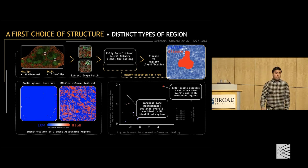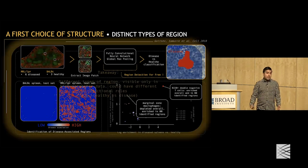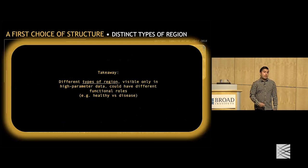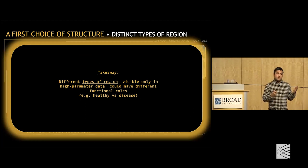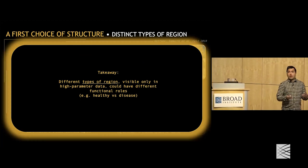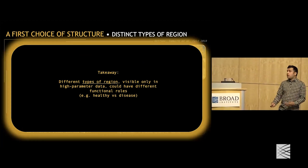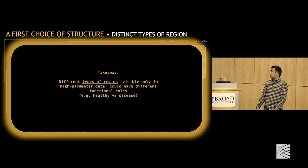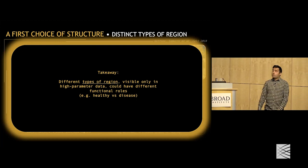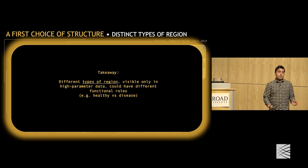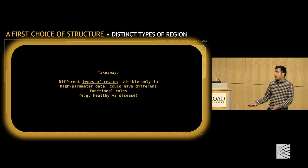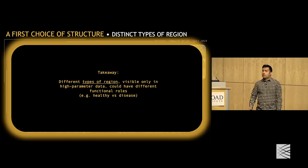The takeaway is that there are different types of regions in a tissue that are visible only in high-parameter data and that could have different functional roles — for example, healthy versus disease.